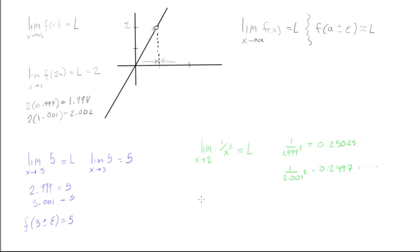So we find that our limit, limit as x goes to 2 for 1 over x squared, is equal to 0.25.